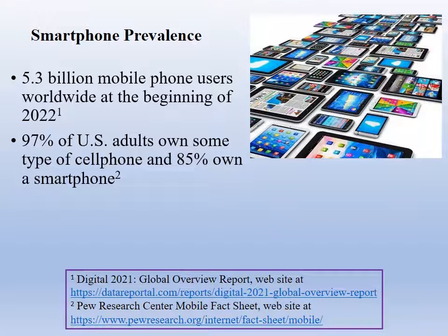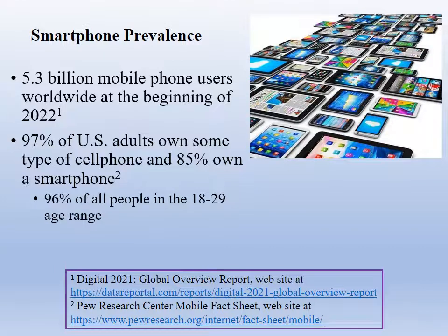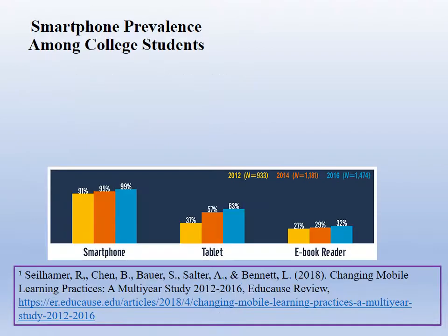Clearly, these devices are completely ingrained into our lives. Smartphone statistics are especially high for people of college age. Pew in their 2021 report states that 96% of all US adults in the 18–29 age range own a smartphone. So what other evidence exists for high smartphone prevalence among college students?